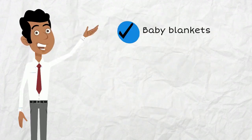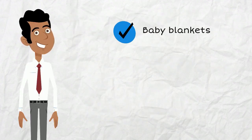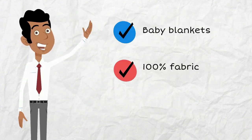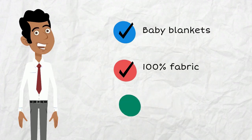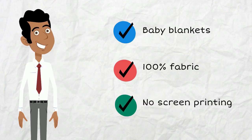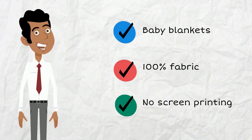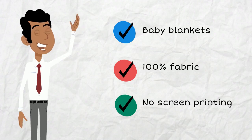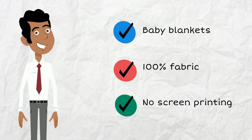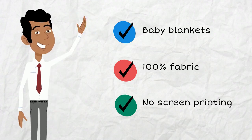The second CPC is for a baby blanket that's 100% fabric with no screen printing. This product would not require any testing, but all children's products need a CPC, even those that don't have any testing requirements.